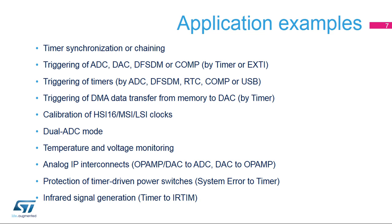Timers can also be triggered by DF-SDM short-circuit detection or by a real-time clock interrupt at a given time or at a regular interval. Timers can also be triggered based on a comparator output value or when a USB start of frame is detected; triggering a DMA data transfer from memory to the DAC by a timer to allow a frequency-controlled conversion; and calibrating HSI-16, MSI, or LSI clocks — for example, measuring the external oscillator LSE frequency by a timer clocked by the calibrated internal oscillator. Dual ADC mode uses ADC-1 as the master to trigger a start of conversion for the ADC-2 slave.